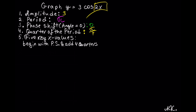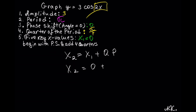Now we need to calculate the 5 key x-values. The first x-value is always the phase shift, and the phase shift is 0, so x₁ is 0. The next x-value, x₂, is calculated by taking x₁ and adding a quarter of the period to it. So x₂ equals 0 plus π/4, which gives us x₂ equals π/4.